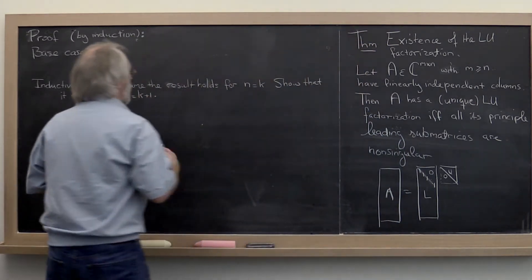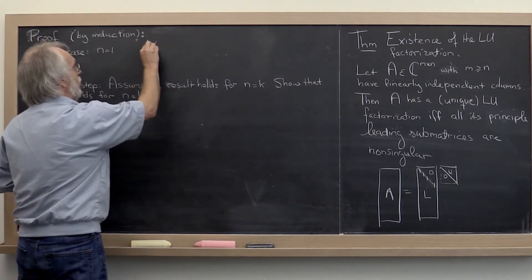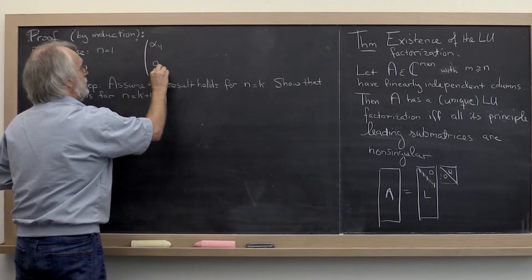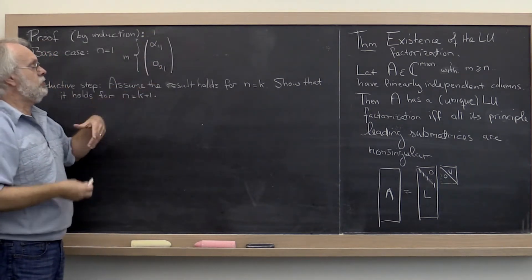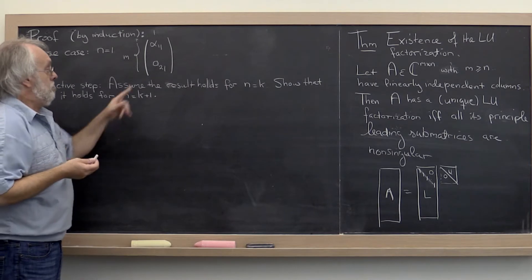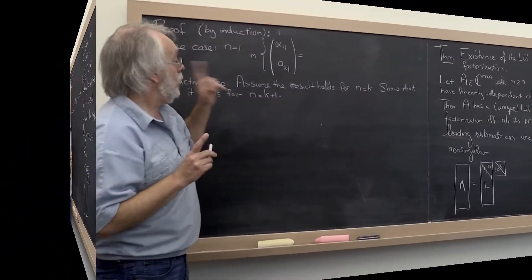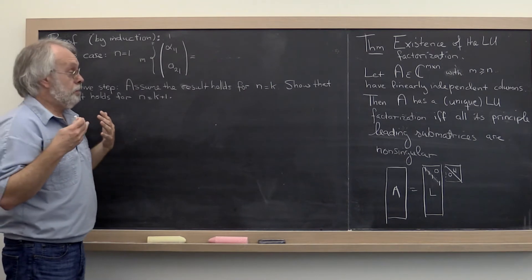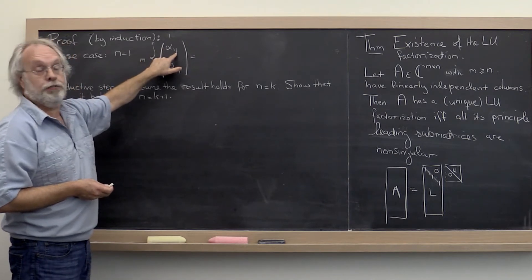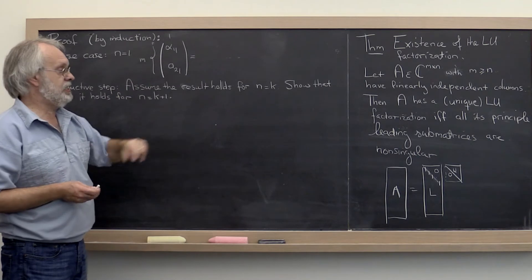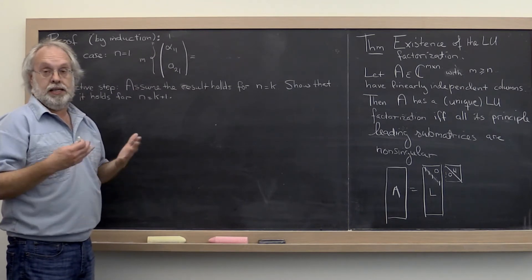Now if A only has one column, then it looks something like this: alpha11 over a21. So this is now m by 1. Now it could be that a21 is a vector of length 0. That's actually okay. Notice that this only has one principal-leading submatrix. That's the matrix that's just alpha11. So what we're saying is that that matrix is non-singular. But if that matrix is non-singular, then that means that alpha11 is not 0.